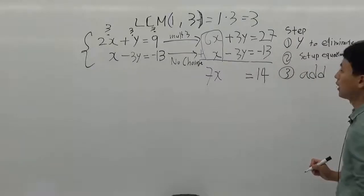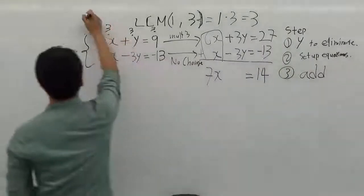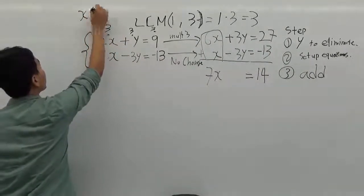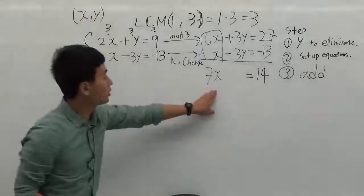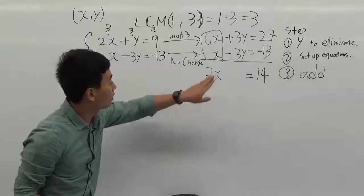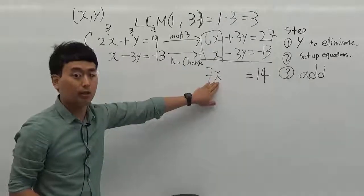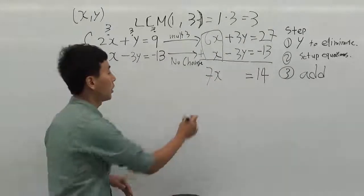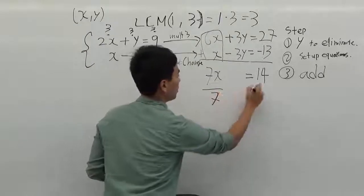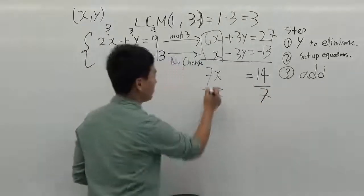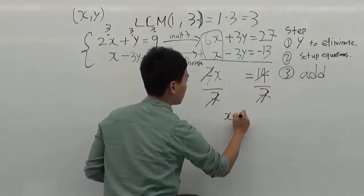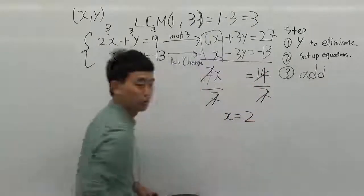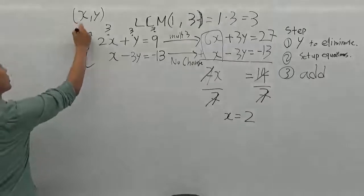We have to find, we know our answer will be (x, y), it's just one point. So we have to find the x. I want to get the x by itself, so I'm going to get rid of the 7. Divide by 7. So x is equal to 2. So we found our x is 2.